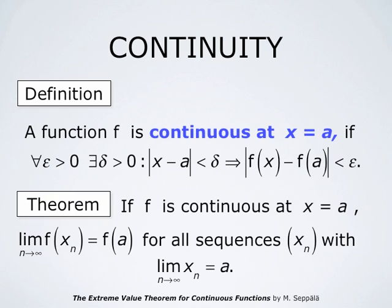Continuous functions have the following important property that has been observed already earlier. If f is continuous at x equals a, then the limit of f at x_n as n approaches infinity is f at a, for all sequences x_n with limit a. This theorem is in fact an if and only if condition for continuity, but here we need only this part of the statement: if f is continuous, then the limit of f of x_n is f at a for all sequences x_n with limit a.